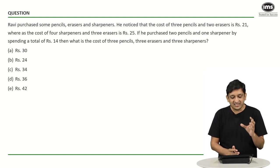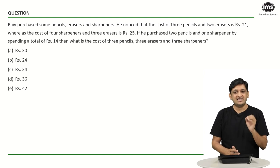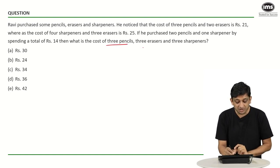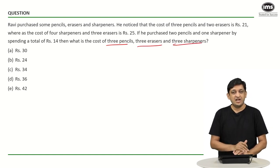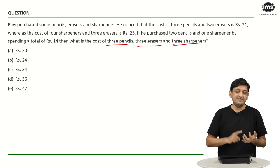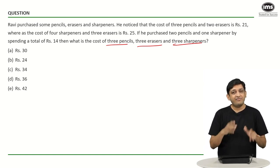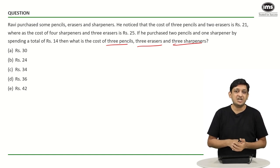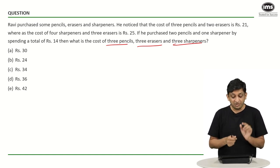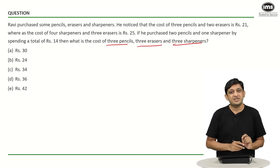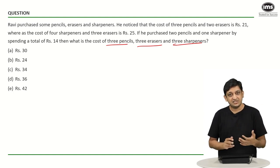If you look at the last part of the question, it is a good giveaway. We have to find the cost of three pencils, three erasers and three sharpeners. If you have not been asked the price of every individual item, why are you trying to figure out each one separately? What you have to find is the price of the combination, so try to think in terms of the combination itself.